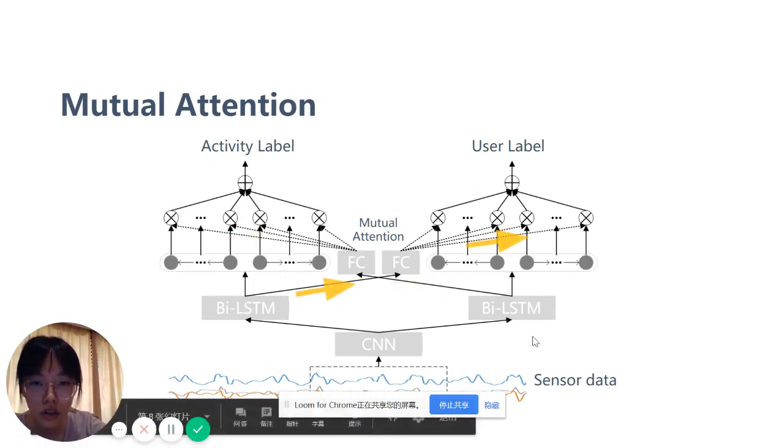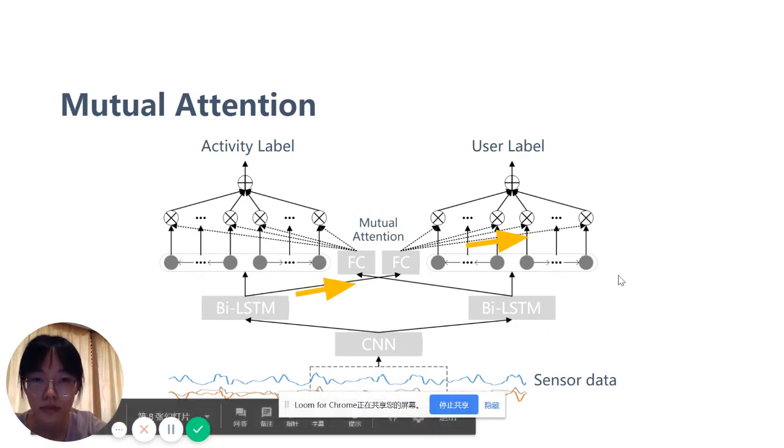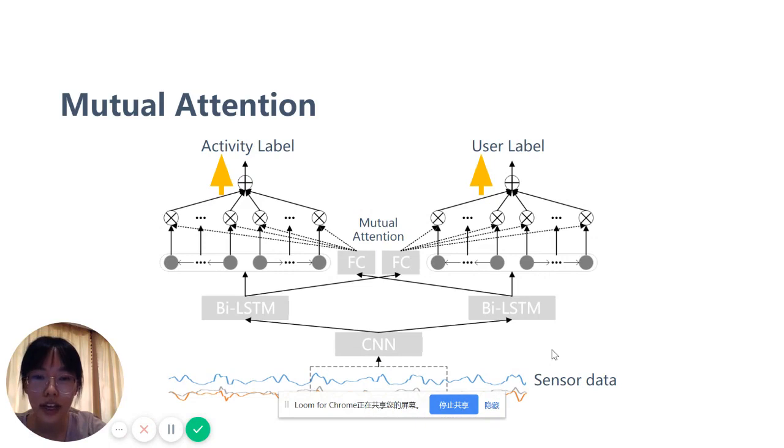For user recognition, it learns the mapping from activity features to the weights of user features and adjusts these weights according to the current activity scenario. These weighted features are used for classification, completing the entire network structure.